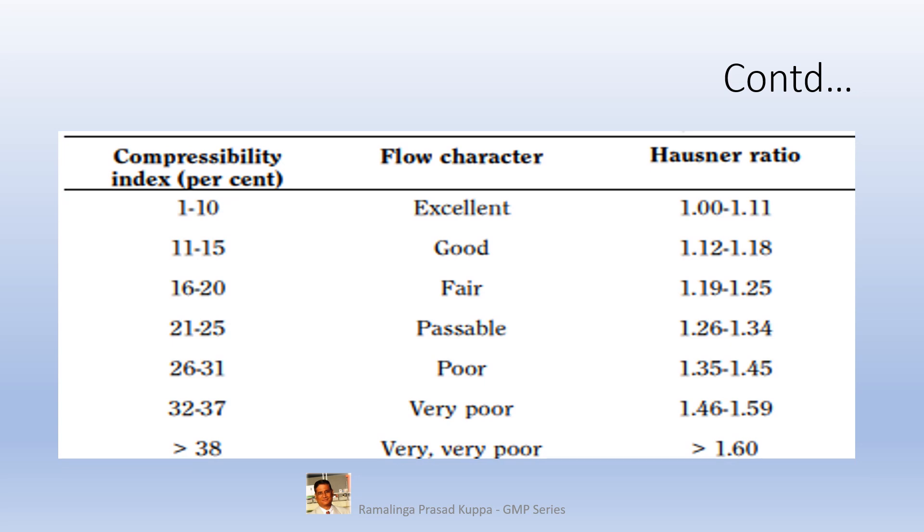These are typical values for Hausner ratio. Values around 1.00 to 1.11, the flow characteristics are excellent. When it is more than 1.60, the ratio is very very poor.